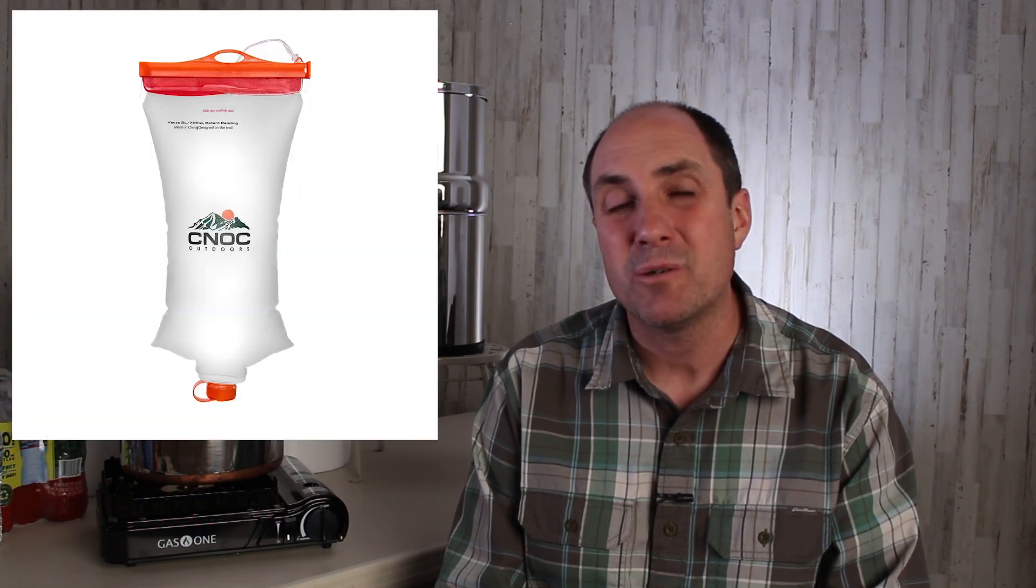One of the aftermarket products that I've liked is a bag from Nock called Vecto. It's a three liter bag or it comes in a two liter bag and it's just a great companion to go with the Sawyer Squeeze. It makes it easy to use as a gravity filter or as a squeeze filter.